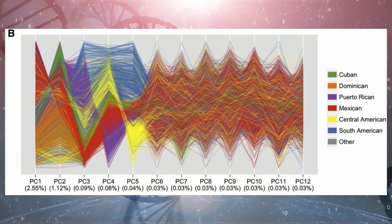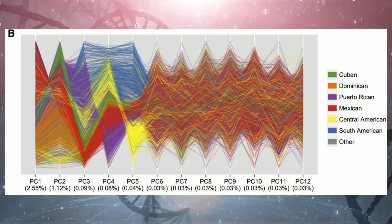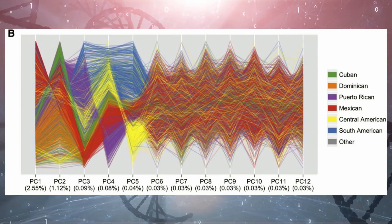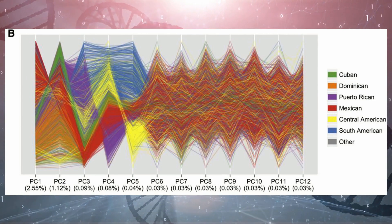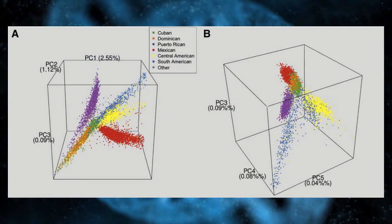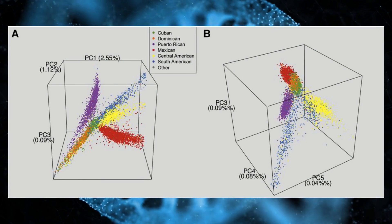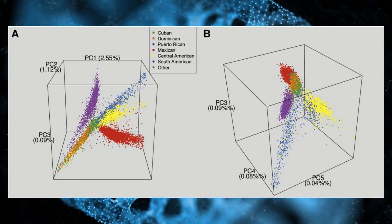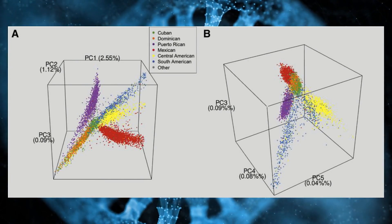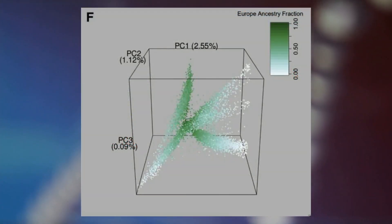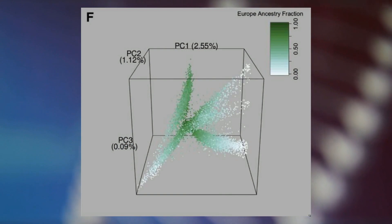Individuals with Caribbean backgrounds were more spread between European and African ancestry, while those with mainland backgrounds were spread between European and Amerindian ancestry. When looking at the first few principal components (PCs), which are statistical measures used to represent genetic differences, distinct differences were observed among the six groups, becoming more pronounced as the proportion of European ancestry decreased.